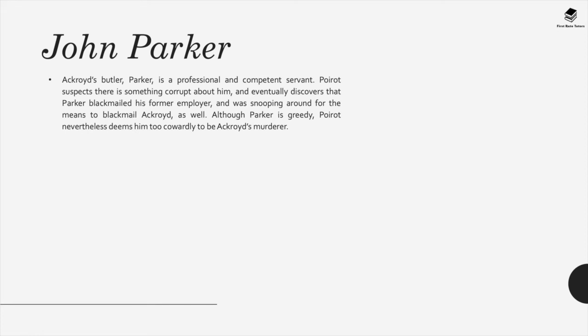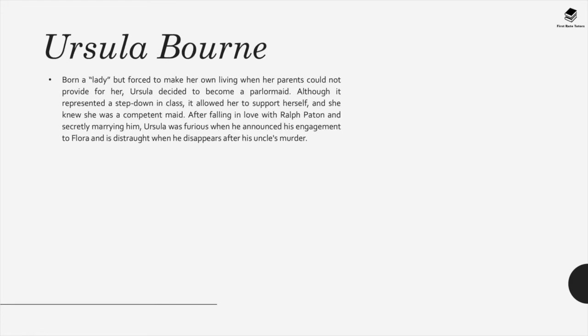John Parker, Ackroyd's butler, is a professional and competent servant. Poirot suspects there is something corrupt about him and eventually discovers that Parker blackmailed his former employer and was snooping around for the means to blackmail Ackroyd as well. Although Parker is greedy, Poirot nevertheless deems him too cowardly to be Ackroyd's murderer. Ursula Bourne, born a lady but forced to make her own living when her parents could not provide for her, decided to become a parlor maid. Although it represented a step-down in class, it allowed her to support herself. After falling in love with Ralph Patton and secretly marrying him, Ursula was furious when he announced his engagement to Flora and is distraught when he disappears after his uncle's murder.